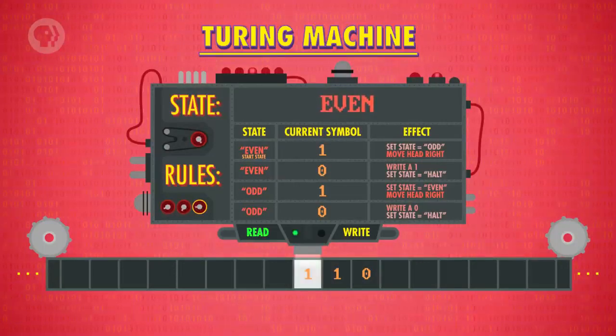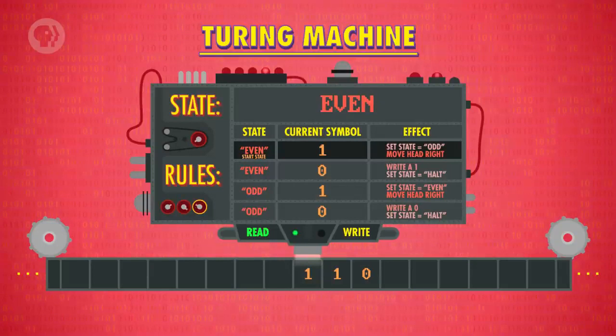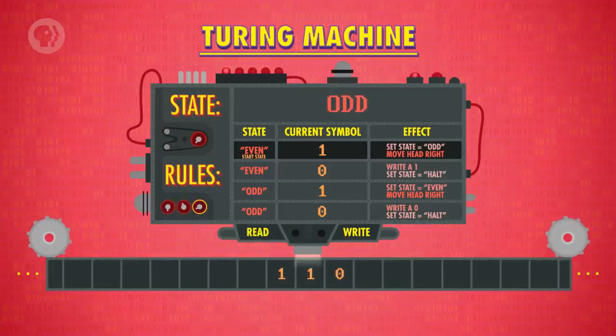Our state is even, and the first number we see is a one. That matches our topmost rule, and so we execute the effect, which is to update the state to odd, and move the read-write head to the right by one spot.